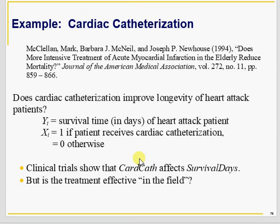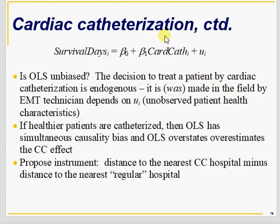Another interesting example is cardiac catheterization. The question is whether those who receive cardiac catheterization survive more days than those who don't. The problem is that usually healthier patients receive cardiac catheterization compared to weaker patients, so whether it is the healthy patients who survive longer, with or without catheterization, or whether it is catheterization itself that leads to more survival — catheterization is not exogenous here.